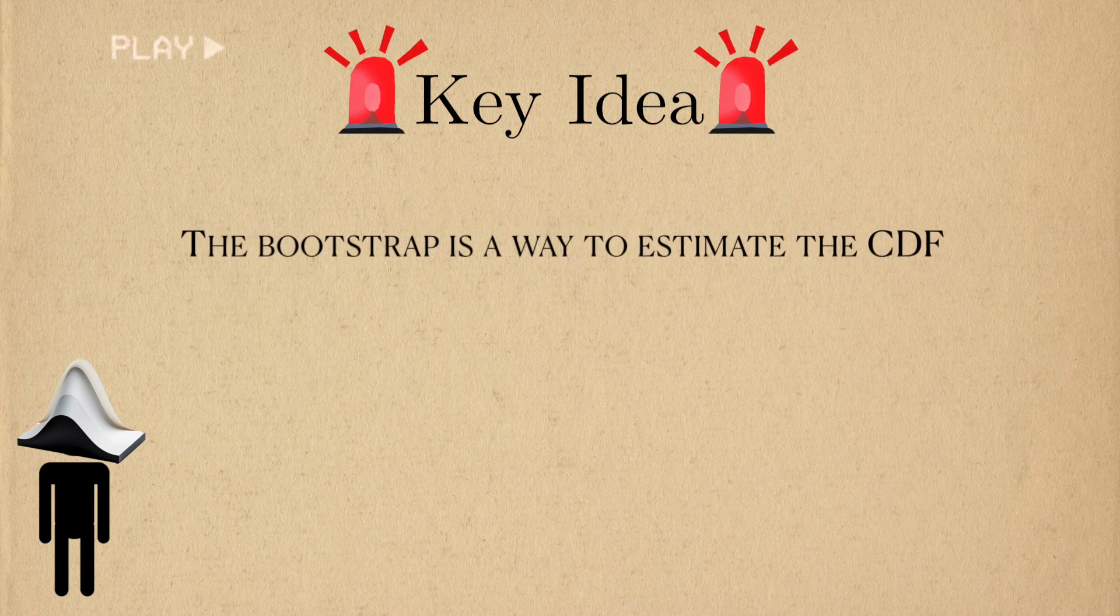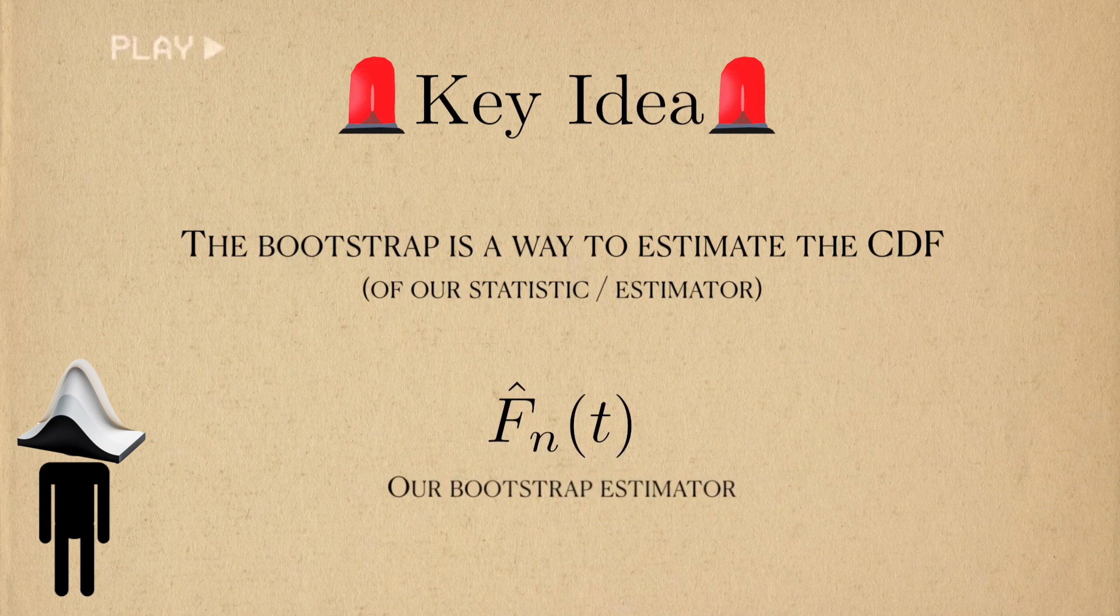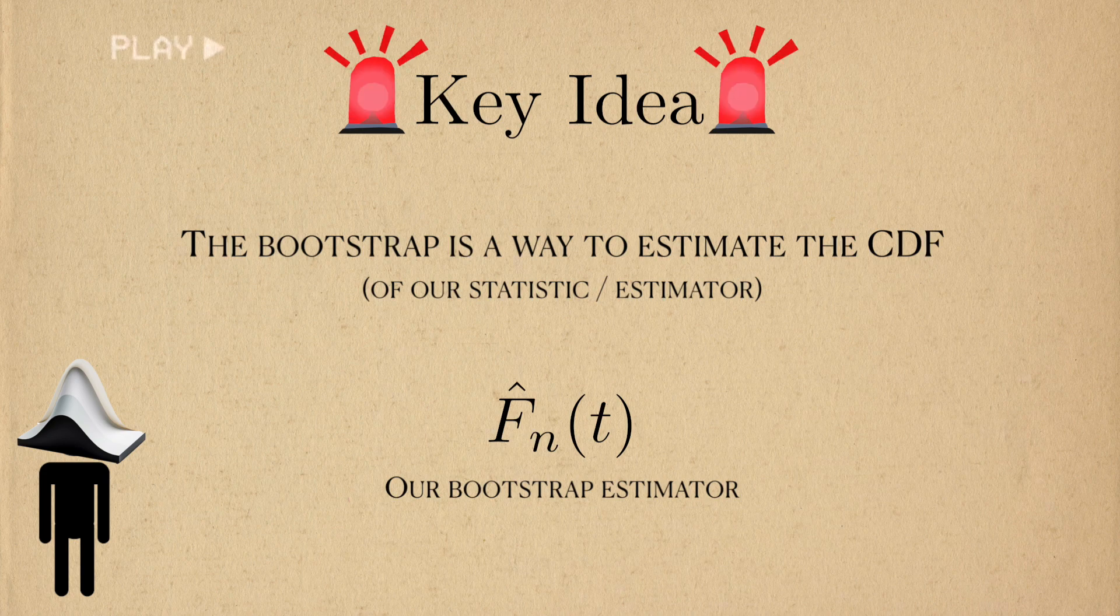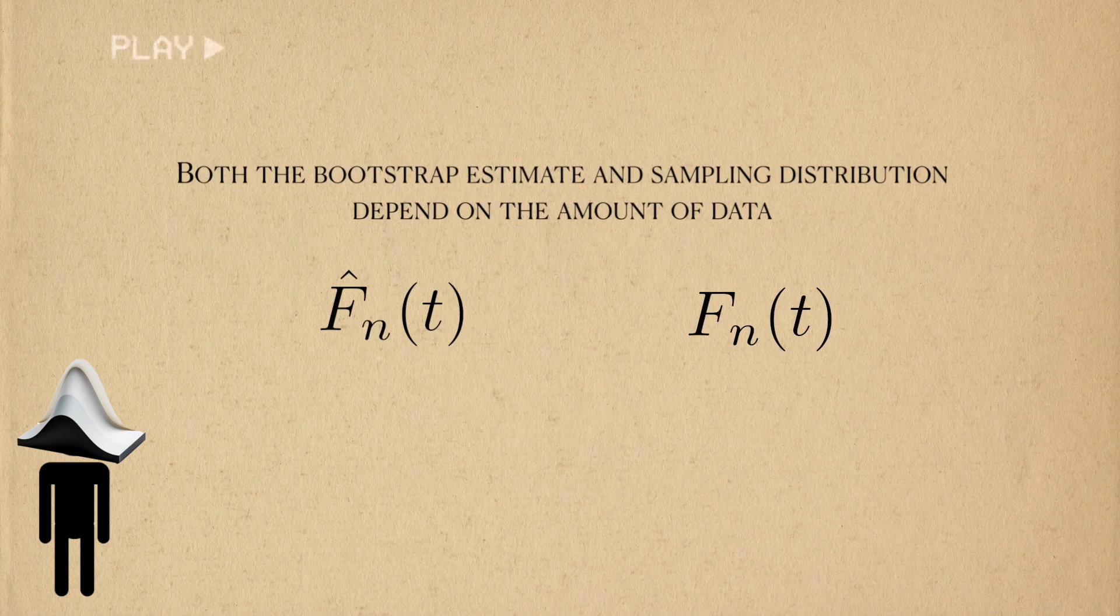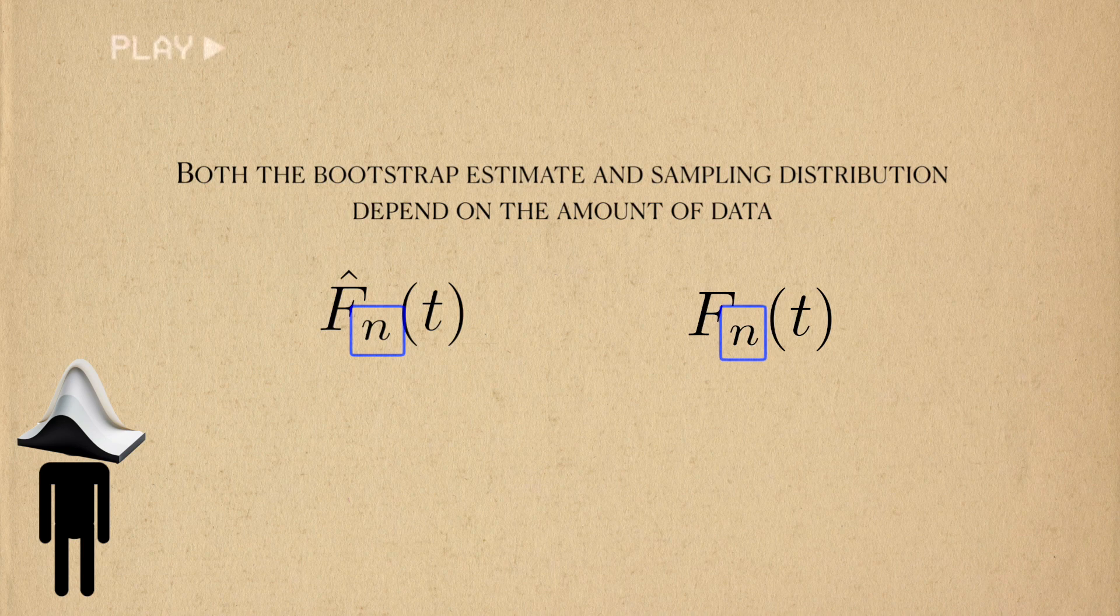The bootstrap hinges on the idea that we can somehow approximate the CDF of our statistic. We'll denote the sampling distribution of the CDF like this. We need data to create an estimator so its CDF will actually change shape depending on how much data we collect. We denote this dependence with the subscript N here. This dependence will come up again later, so just keep it in mind.